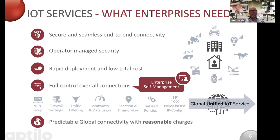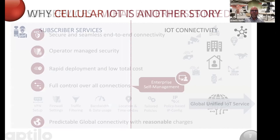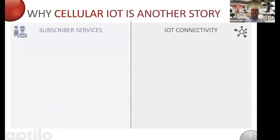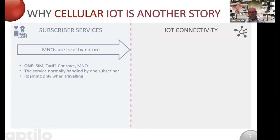Customers also need predictable global connectivity with reasonable charges. Compared to traditional smartphone subscriber services, IoT is a completely different story. Subscribers and their mobile operators are local by nature — one SIM card per subscription, one tariff, one contract, and one mobile operator. The service is normally handled by one subscriber during the lifetime of the service, and roaming is only when traveling.